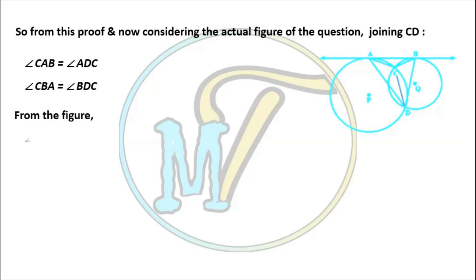Again from the figure, angle ADB is the addition of angle ADC and BDC. From the above two conclusions, angle ADC can be replaced by angle CAB and angle BDC by angle CBA.